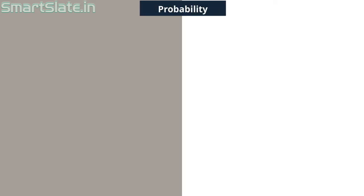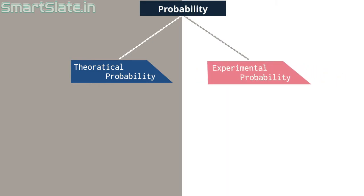There are two types of probability. Theoretical probability which is also called classical probability. Second one is experimental probability or empirical probability. We will discuss both with one simple example.